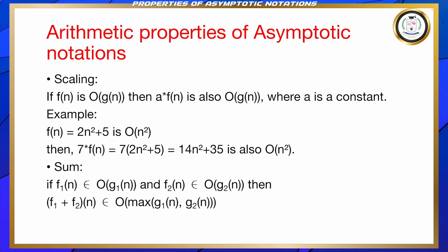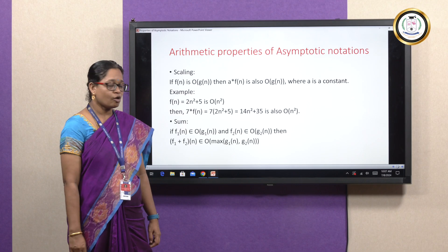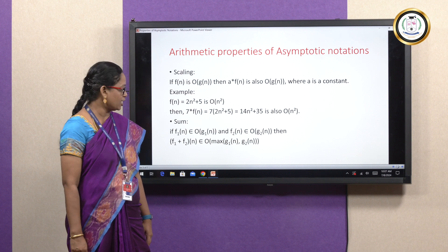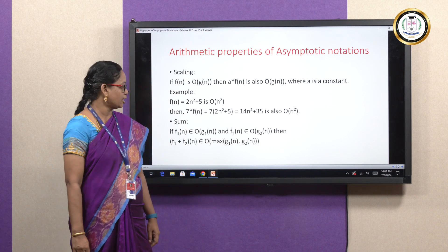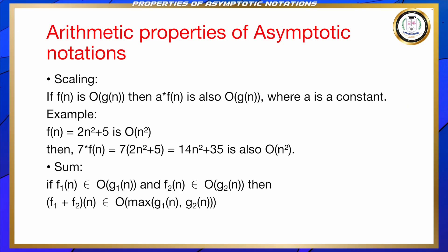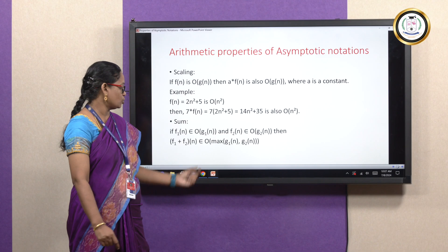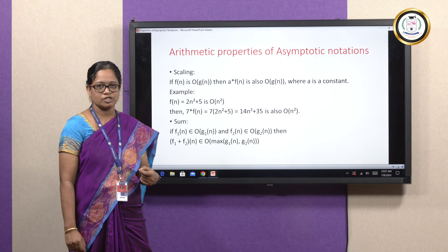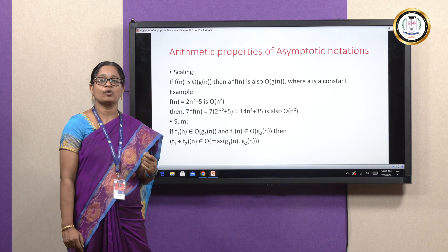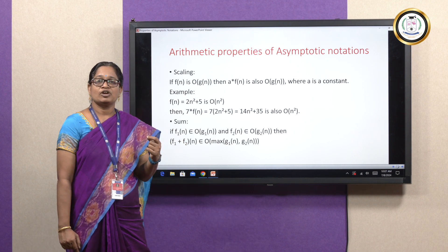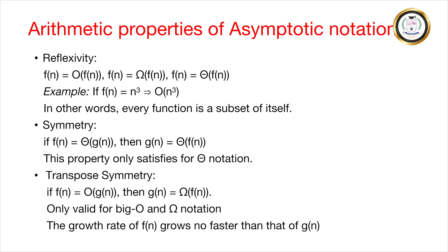Next comes the sum property. Here we take two different functions f1 and f2, and two different functions g1 and g2. If f1(n) belongs to O(g1(n)) and f2(n) belongs to O(g2(n)), then f1 + f2 belongs to O(max(g1, g2)). The addition of f1 and f2 is equivalent to finding the maximum value of the functions g1 and g2.